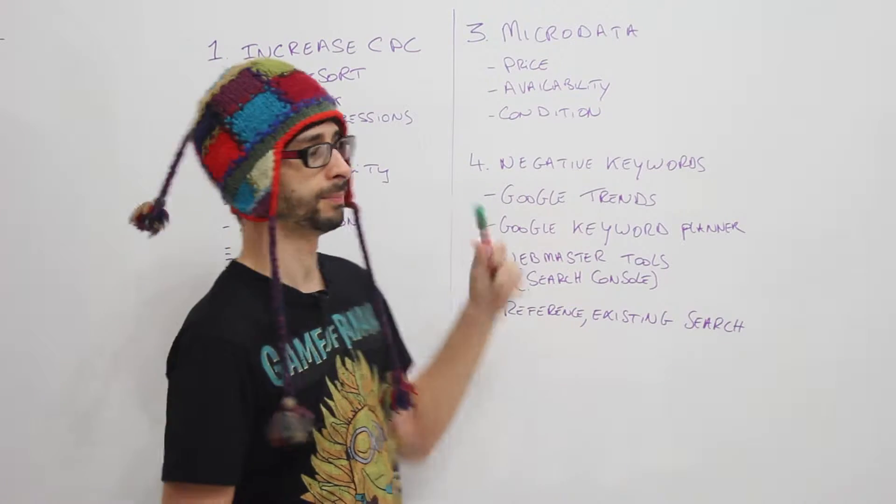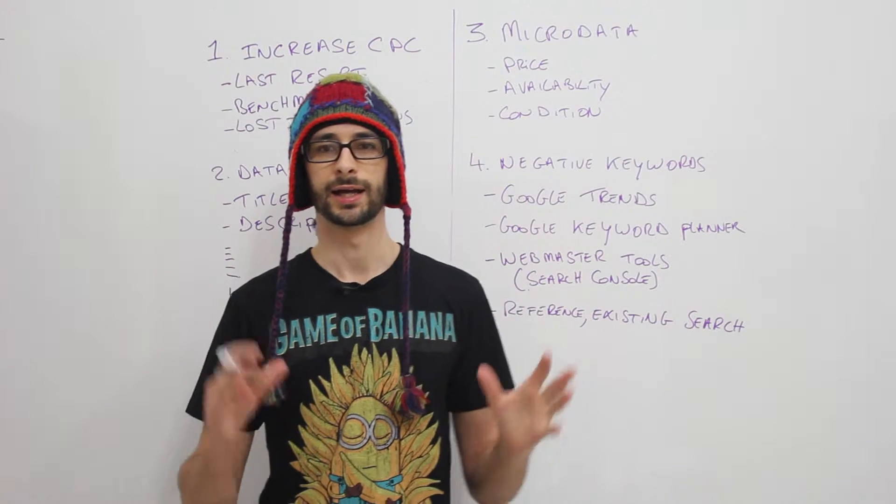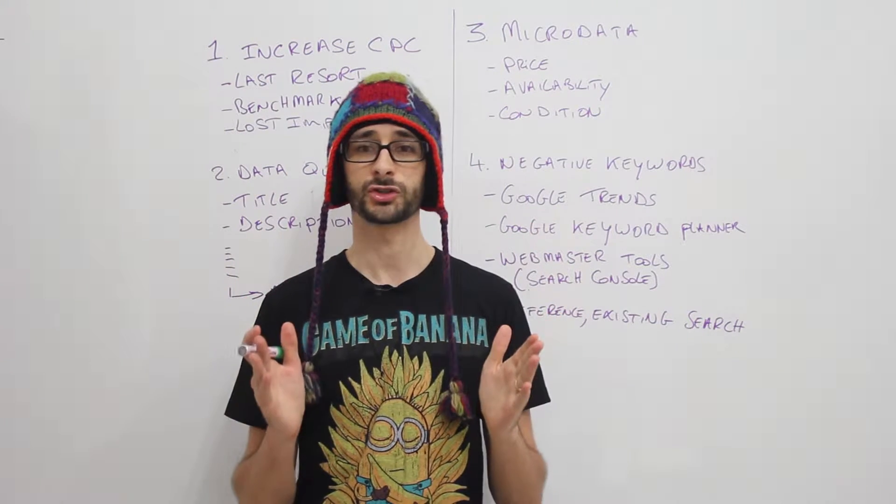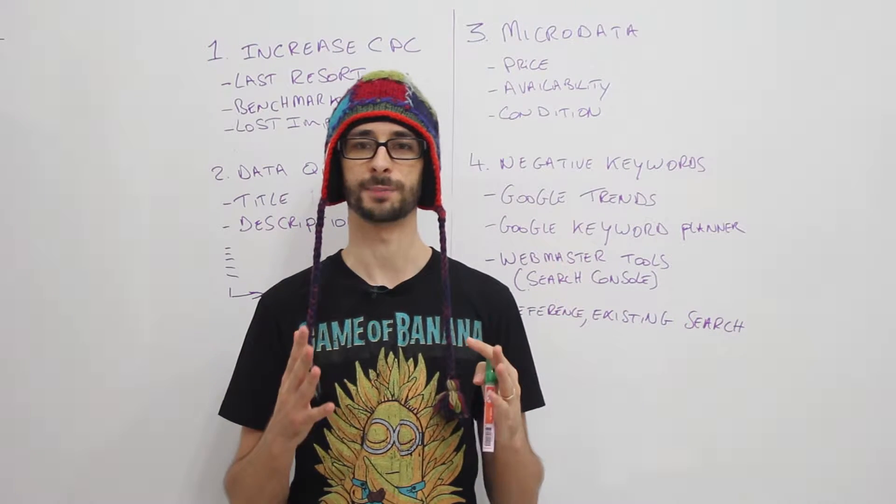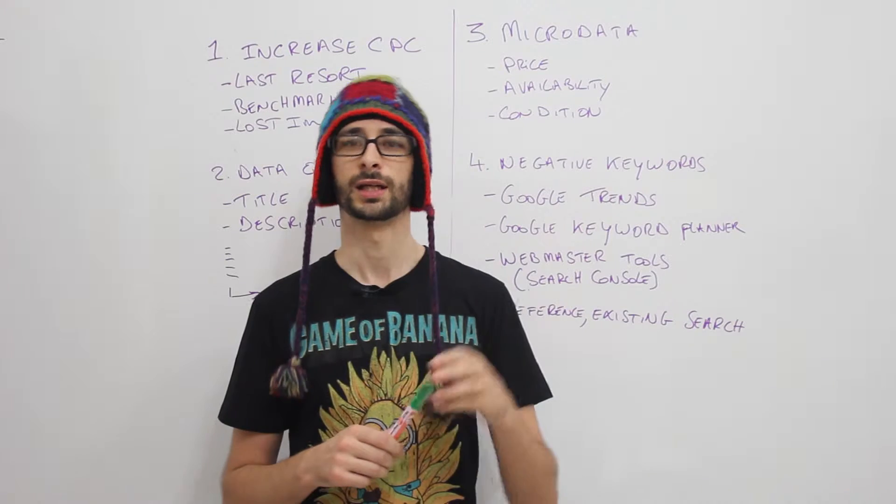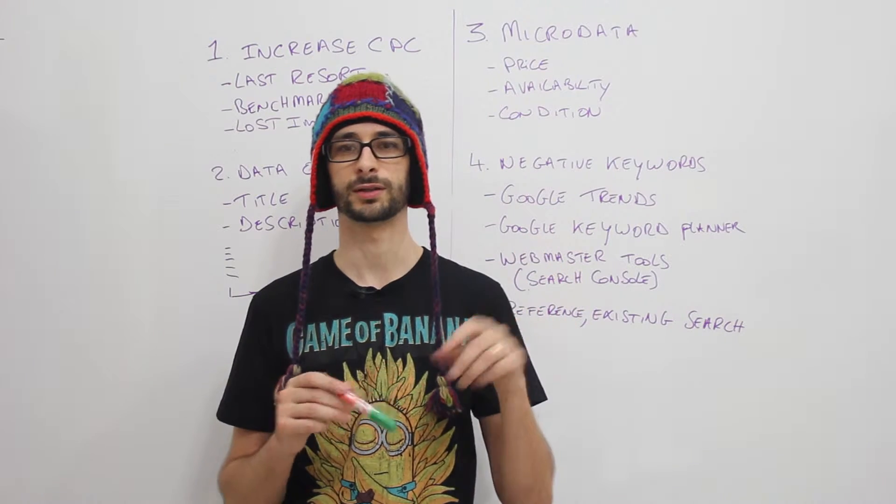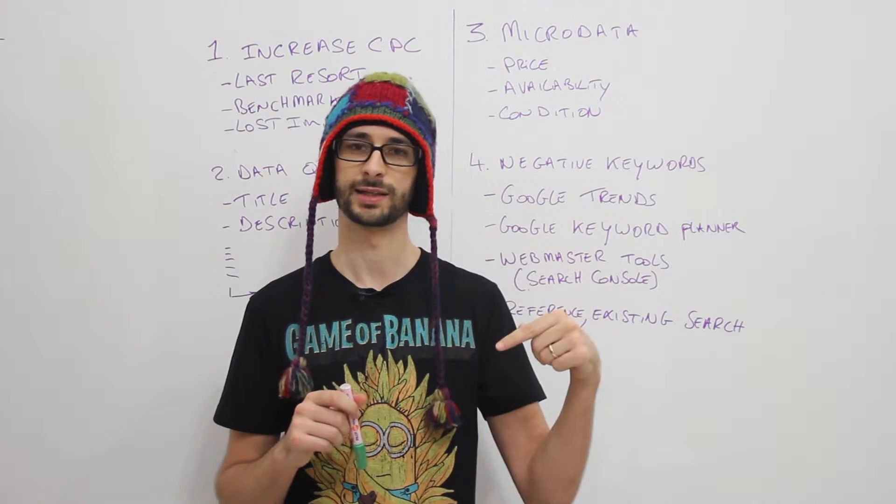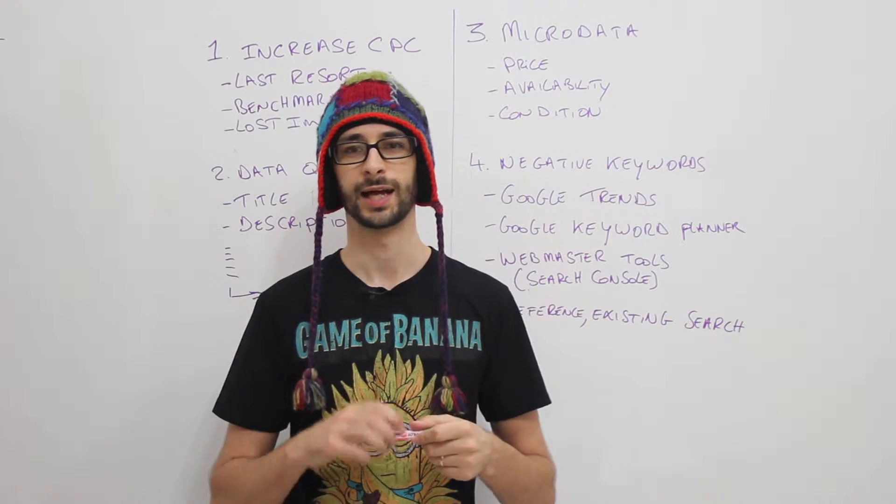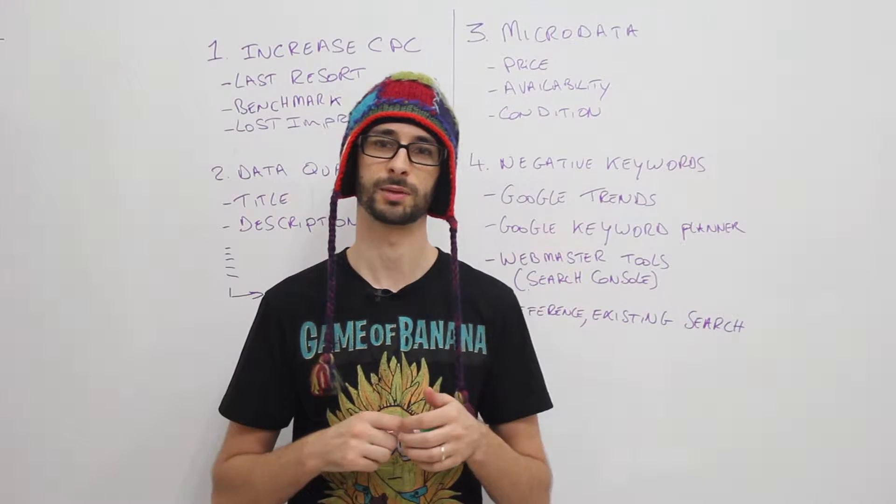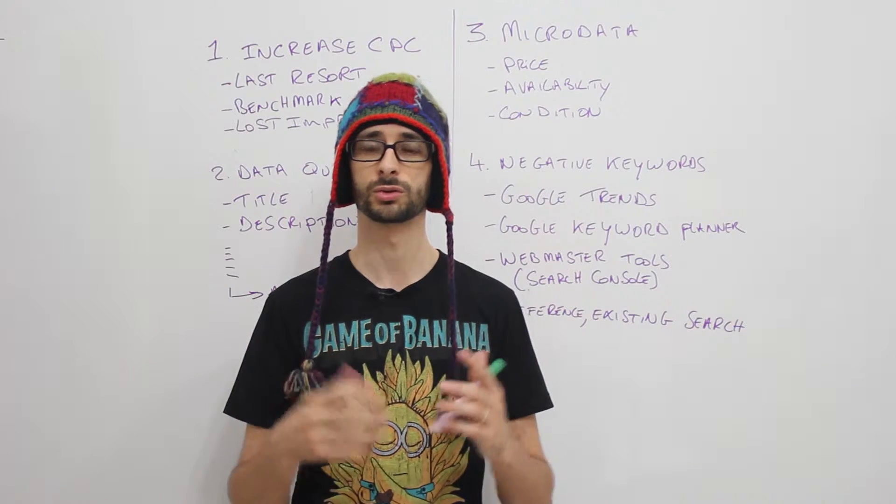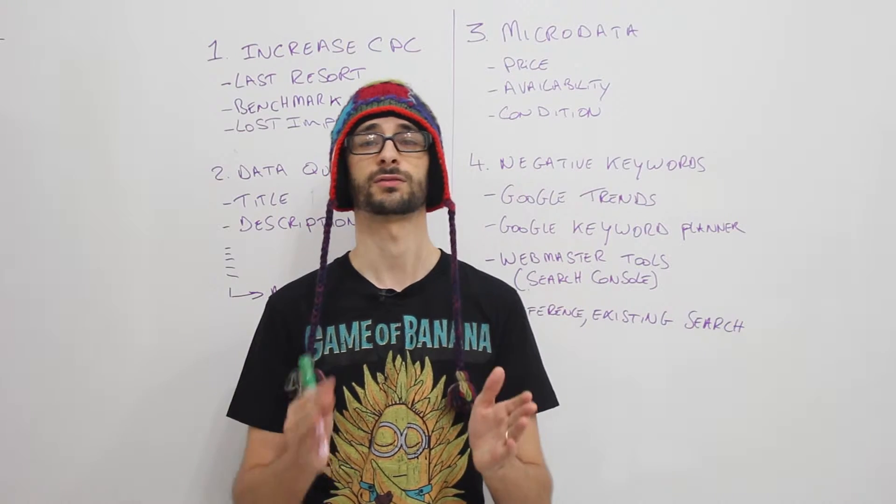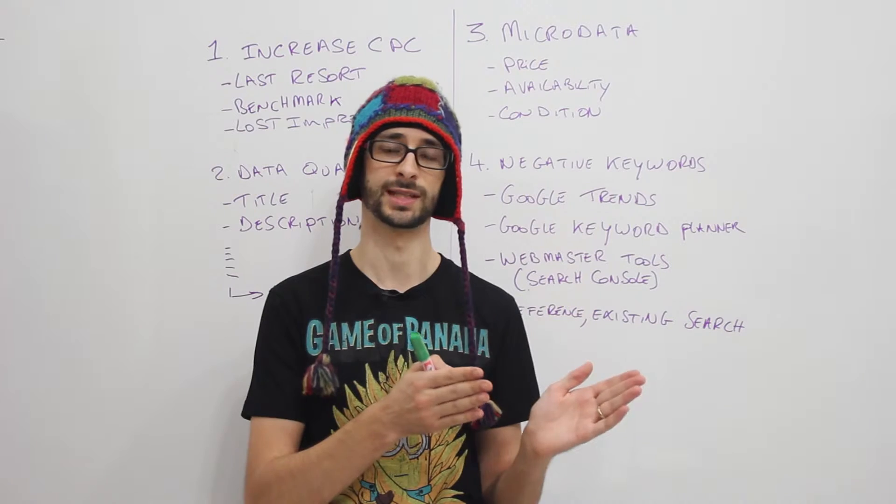The second item I want to cover is the microdata. Now in the Google Merchant Center you can actually enable or disable automatic updates through microdata. So if you go into the left corner you can see settings, then go to automated updates, and you can enable it or disable it. I recommend that you enable this feature because it allows Google then to correlate your data from the website to your data feed.